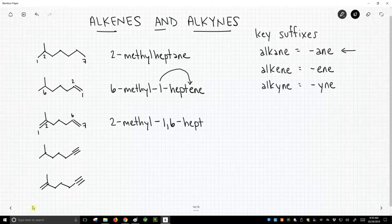This gets a little strange. It's not hept-diene, but the T and the D are weird together. So we keep an A, hepta-diene. And so we know we have a diene, so we need two numbers to indicate that. And we do, we have a 1 and 6.